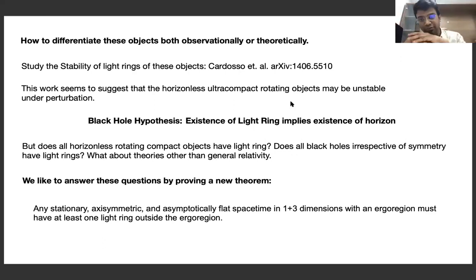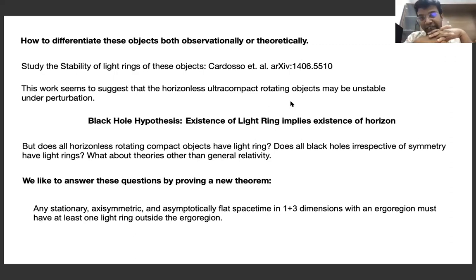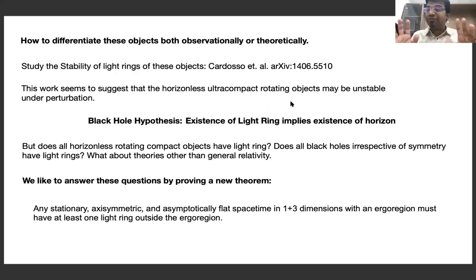A particularly well-known paper by Cardoso and collaborators suggests that horizonless ultra-compact rotating objects — things which may not have an event horizon — may be unstable under spacetime perturbation. The claim is that unlike black holes, many non-black-hole candidates without horizons but with light rings may be unstable under perturbation. If this is true, then theoretically, the existence of a light ring implies the existence of a horizon. Of course, key questions remain, such as: what is the time scale of instability?